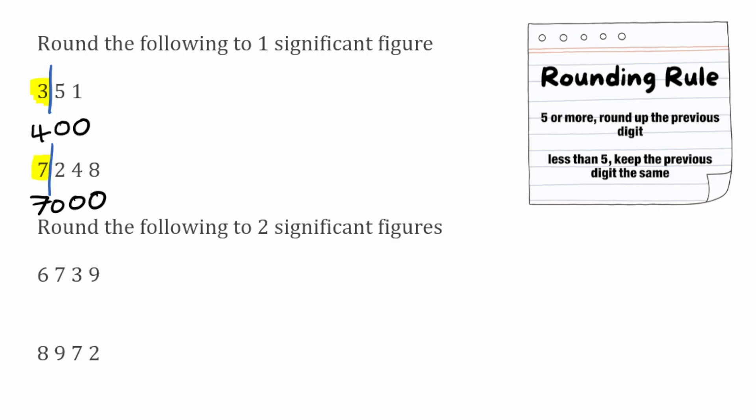We're now going to look at some examples where we're rounding to two significant figures. Just like before, we find our first significant figure by finding our first digit which isn't zero — in this first example that would be 6, so 6 is our first significant figure. Moving to the right, 7 would be our second significant figure.